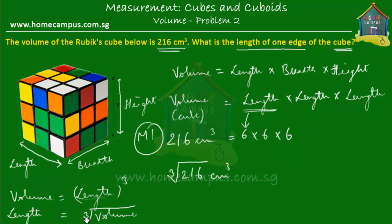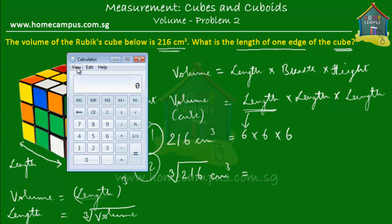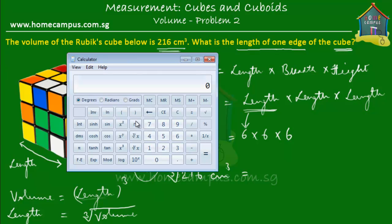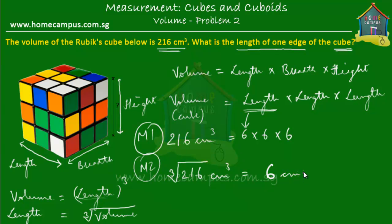So we write the cube root of volume. If we have a calculator at hand — method number two — we find the cube root of the volume. You'll need the scientific version of the calculator because you cannot find the cube root in the standard version. You type in 216, then press the key with a root sign and three written inside it. The cube root of 216 is six, so the answer is six centimeters.